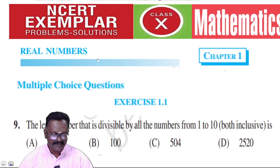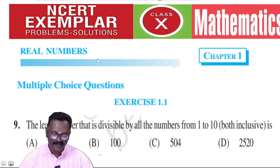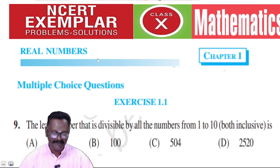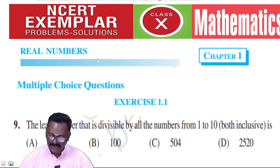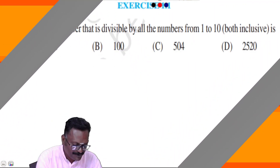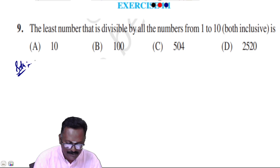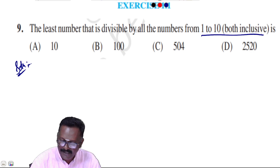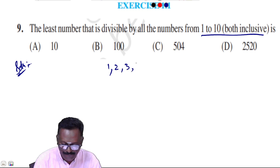Hi students, welcome to my channel Study Care. We are talking about the NCERT example, first chapter Real Numbers, Exercise 1.1, question 9 — find the least number that is divisible by all the numbers from 1 to 10, both inclusive. So the numbers are 1, 2, 3, 4, 5, 6, 7, 8, 9, 10.